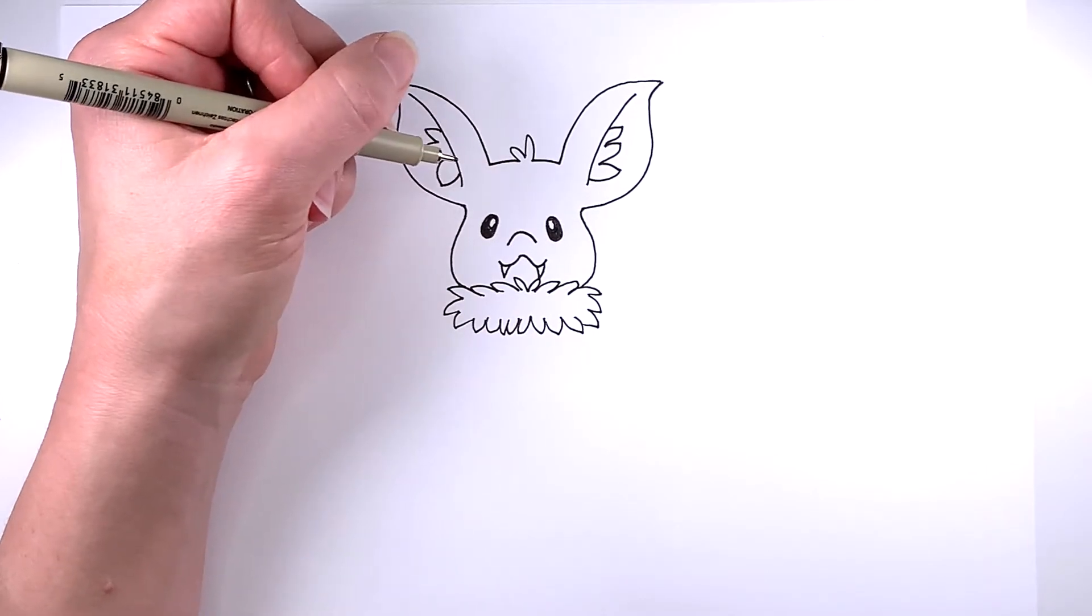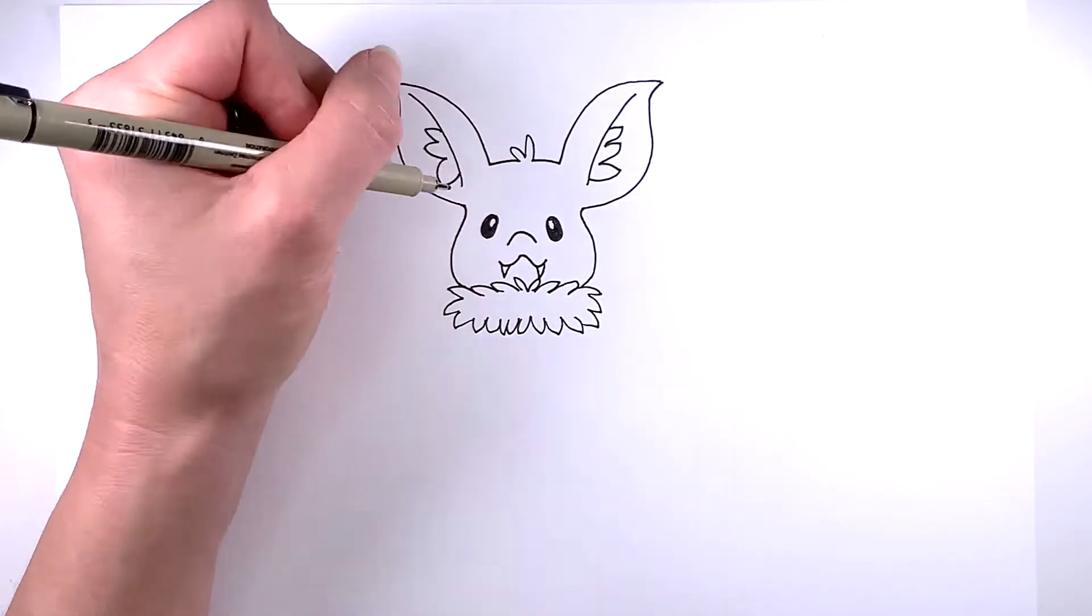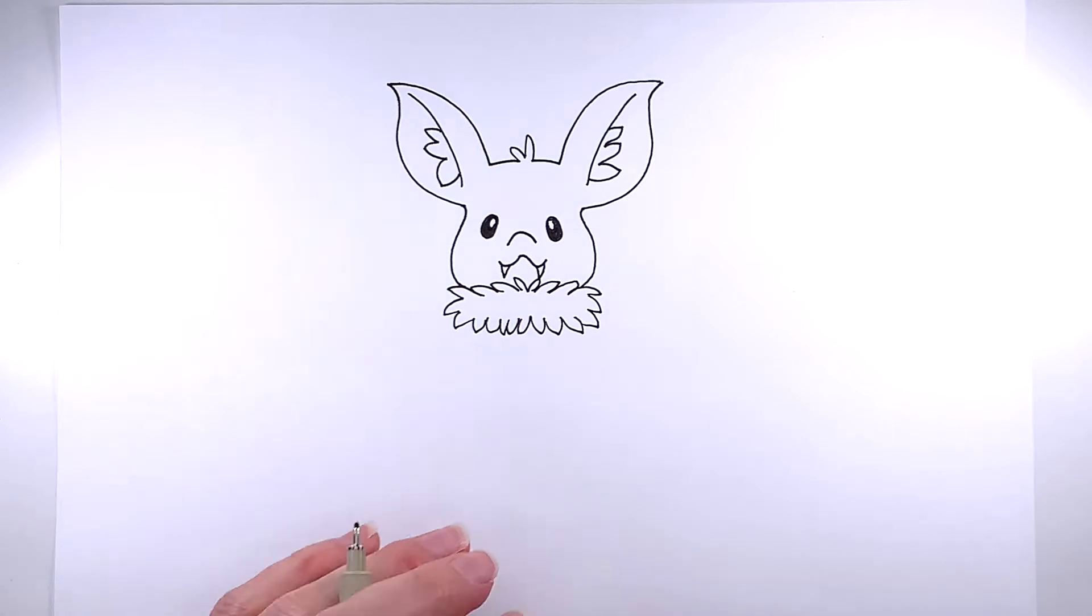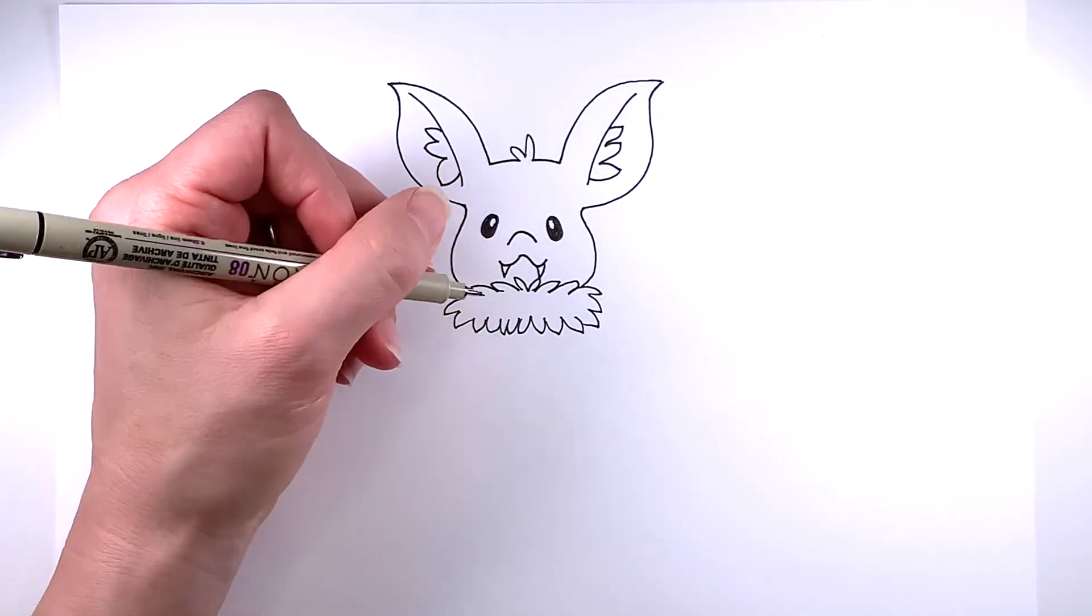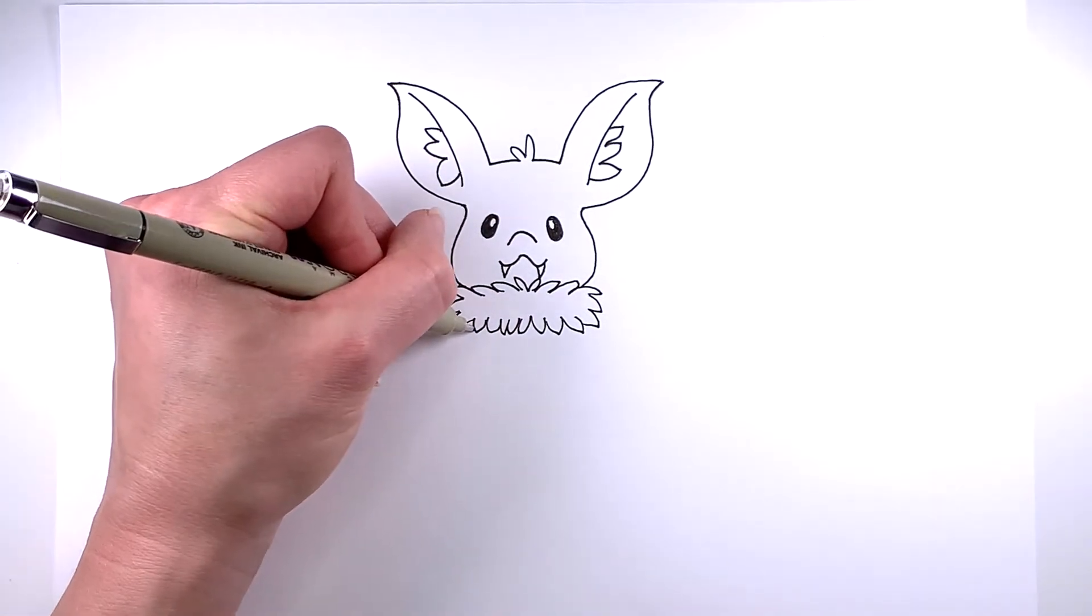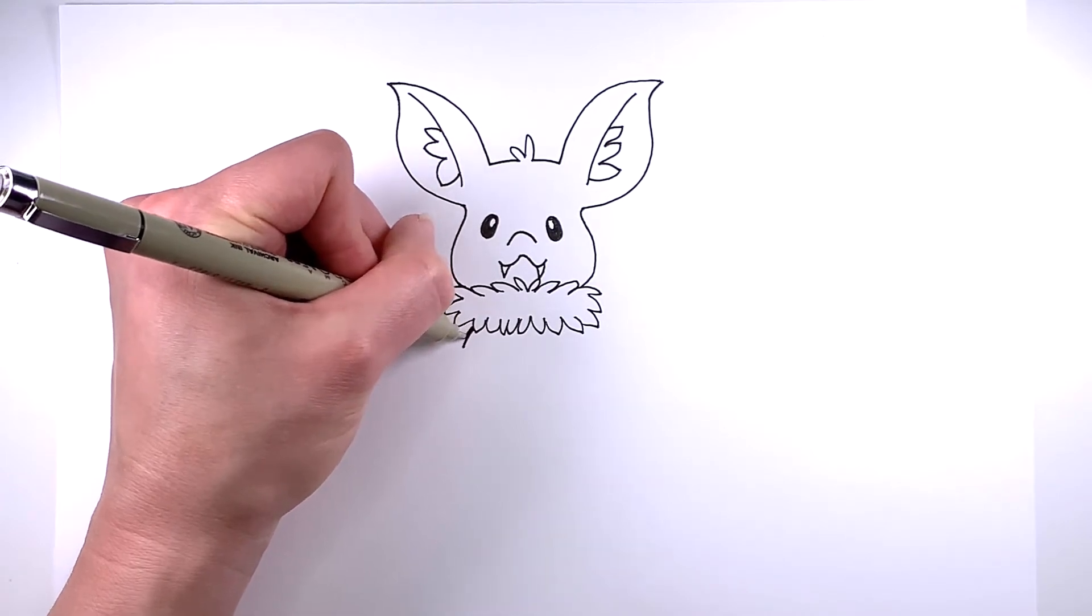Now for the body of the bat, because it's a cute bat, I'm going to make it smaller and rounder. So I'm just going to make two curves coming down on each side.